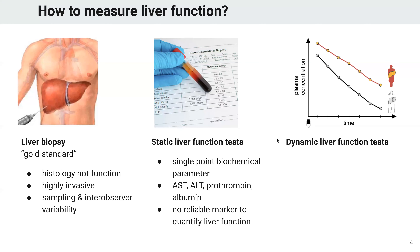On the other hand, what we often have is access to so-called static liver function tests — blood plasma biomarkers which are routinely measured in the clinics. These are single-point measurements; in a single blood sample you determine the concentration. Examples for this are AST, ALT, prothrombin, albumin, bilirubin — a lot of things which are circulating in the blood. Unfortunately, these are no reliable marker to quantify liver function. They often are pretty good to determine that you're basically dying — if half of your liver is destroyed you get a large increase in these markers, but they don't correlate well with general or chronic liver function. Overall, this is not a very reliable marker.